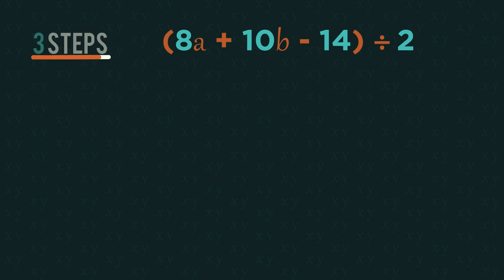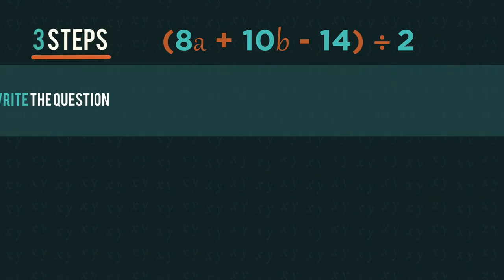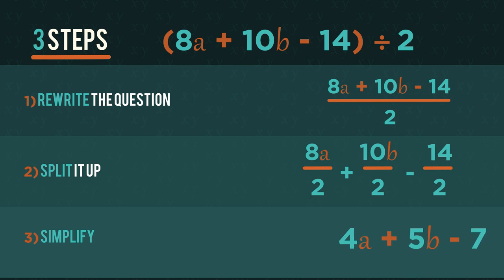So to recap, to divide polynomials by integers or monomials, we just need to remember those three simple steps.